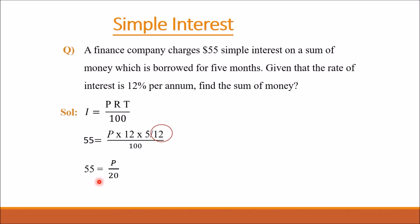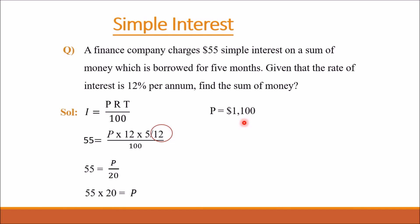After calculations, we get 55 equals principal amount over 20. After cross-multiplication, 55 is multiplied by 20, giving us a result of $1100. This is the value of the sum of money.